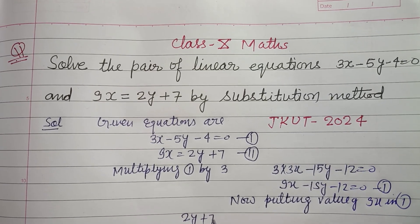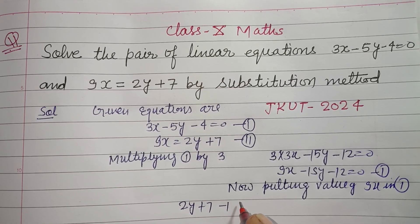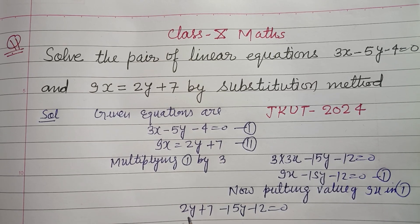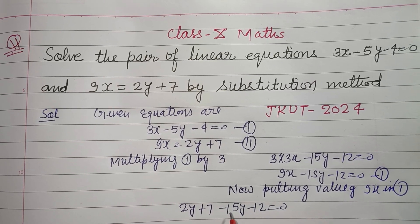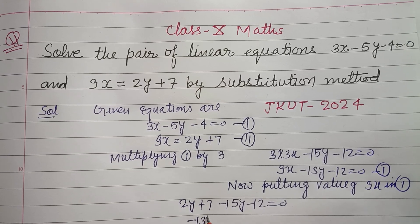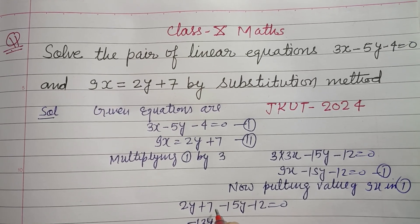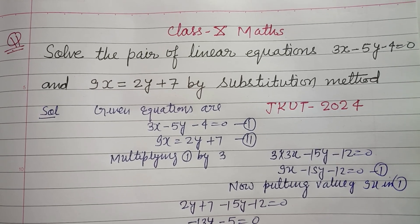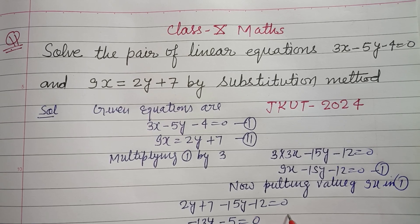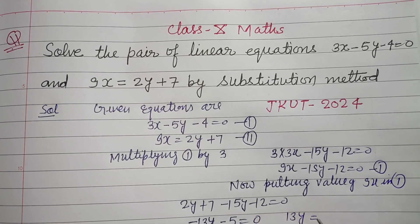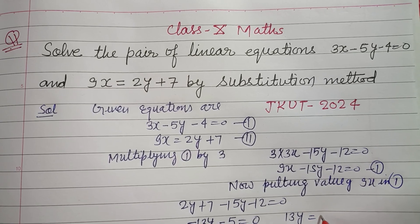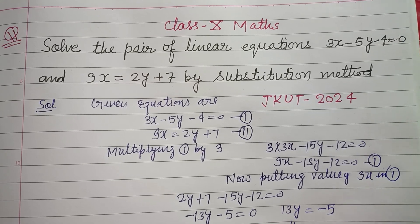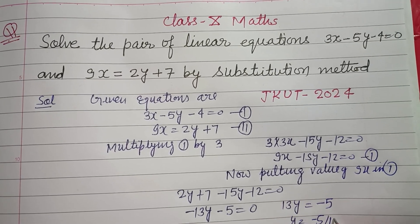So 2y plus 7 minus 15y minus 12 equal to 0. 2y minus 15y, that is minus 13y. 7 minus 12, this is minus 5 equal to 0. Therefore, 13y equals minus 5 and y equals minus 5 upon 13.